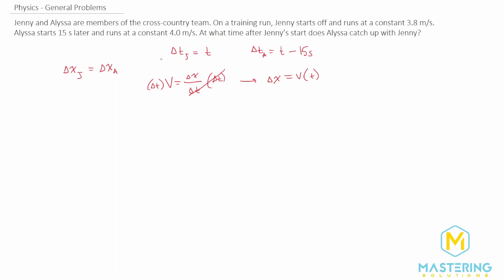We're going to use this and plug in the time for both of them. For Jenny, we have her delta x is going to be velocity times time, and her t is just t already. So we can just plug straight in velocity for Jenny times time for Jenny.